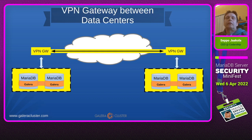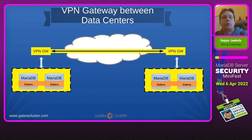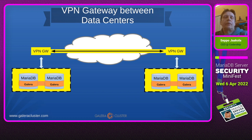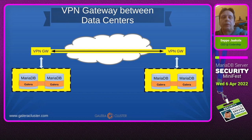There is always the possibility to use VPN gateways. With VPN gateways between your data centers, you can also use plain text replication inside the VPN tunnel. That is another topology that is quite common.